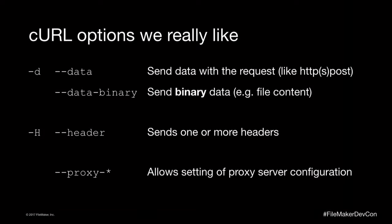I'm going to introduce you to the options that end up being most useful immediately. The data option lets us send data — both string data and binary data. The header option has made the most difference because it allows us to send header information with our request, unlocking a huge number of APIs that previously required a plug-in. For those in a corporate environment, being able to access the proxy header can also be very useful because it may allow you to get out from your network when previously you couldn't.